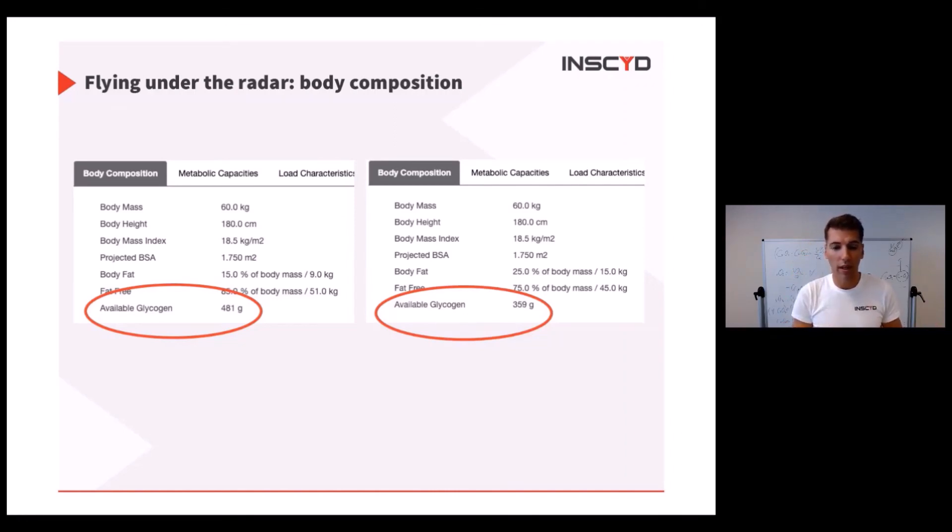But look at the body fat, just a little bit above the red circle. Everything is the same: 60 kilograms, 180 centimeters. One time is 15% body fat, one time is 35% body fat. Look at how much change you have in glycogen.